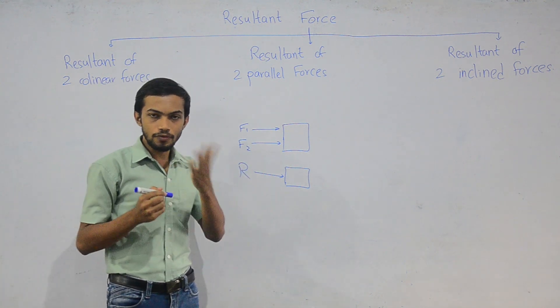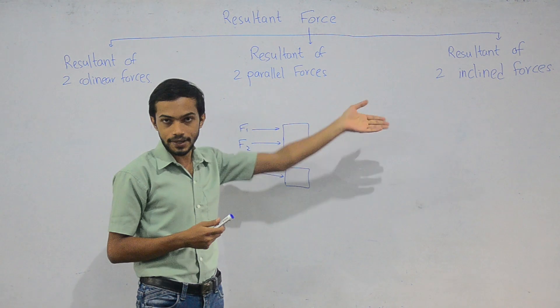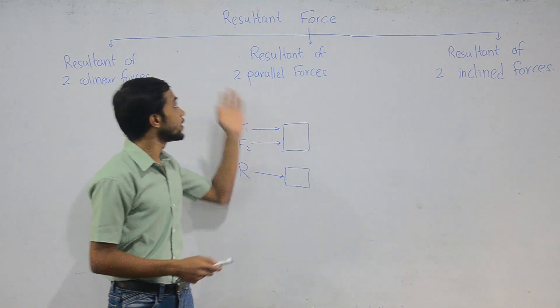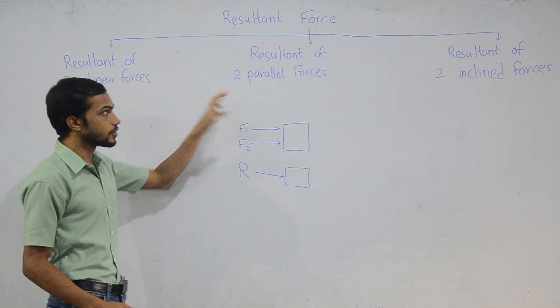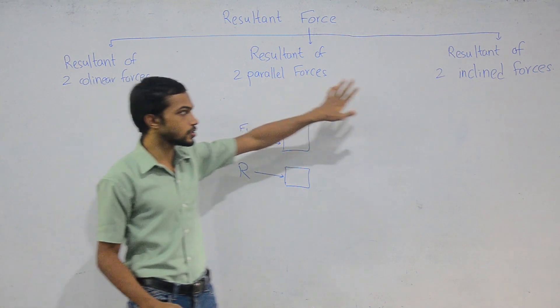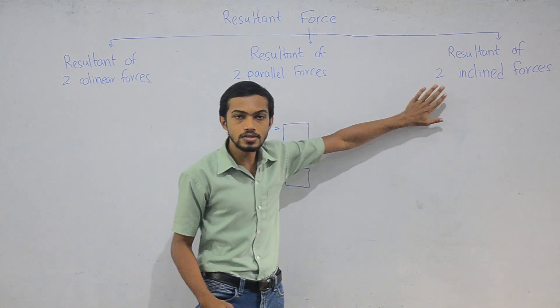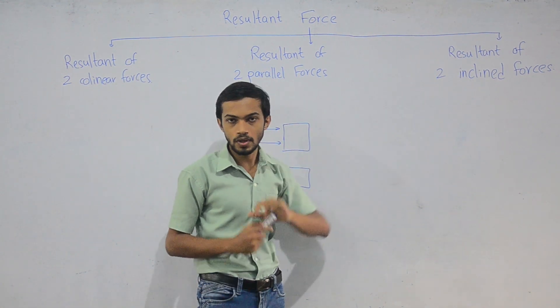Resultant force can be divided into three types: resultant of two collinear forces, resultant of two parallel forces, and resultant of two inclined forces.